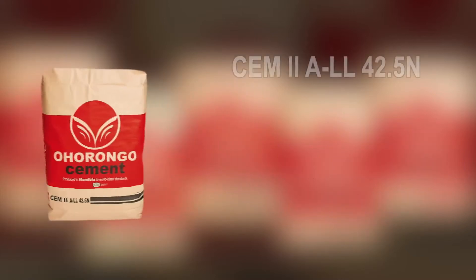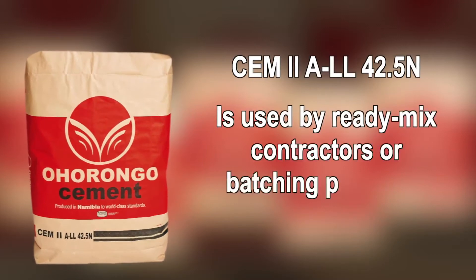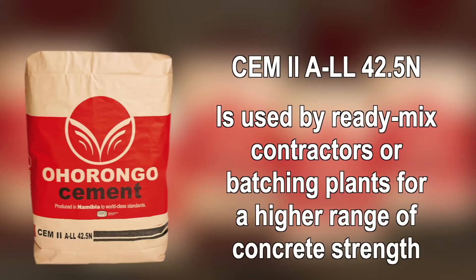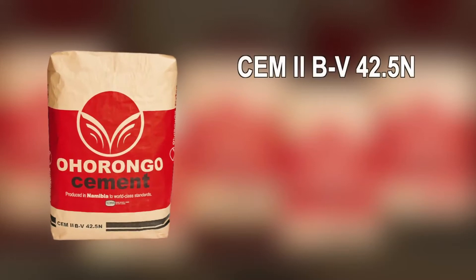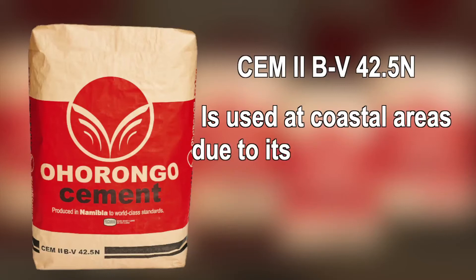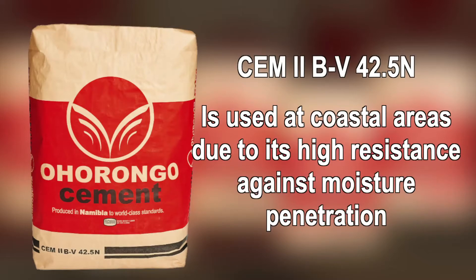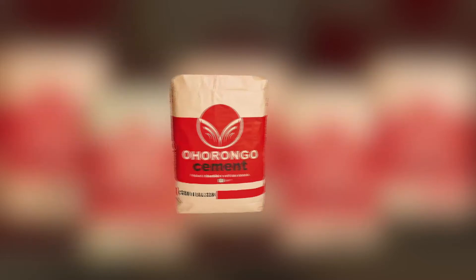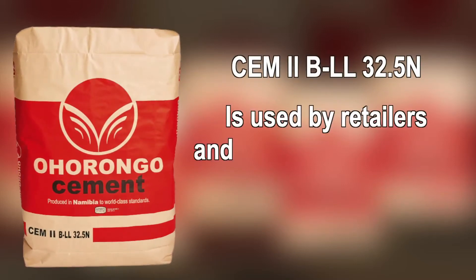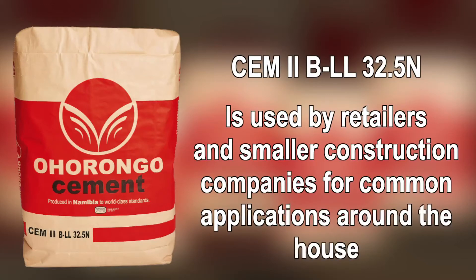CEM 2 ALL 42.5 N is used by ready mix contractors or batching plants because you can achieve a higher range of concrete strength. CEM 2 BV 42.5 N is ideal to use at coastal areas due to its properties of high resistance against moisture penetration and chloride enriched environments. CEM 2 BLL 32.5 N is used by smaller construction companies and common applications around the house, like plastering and small renovations.